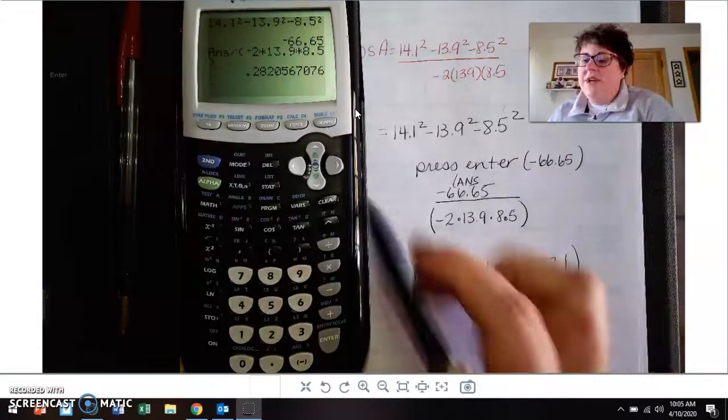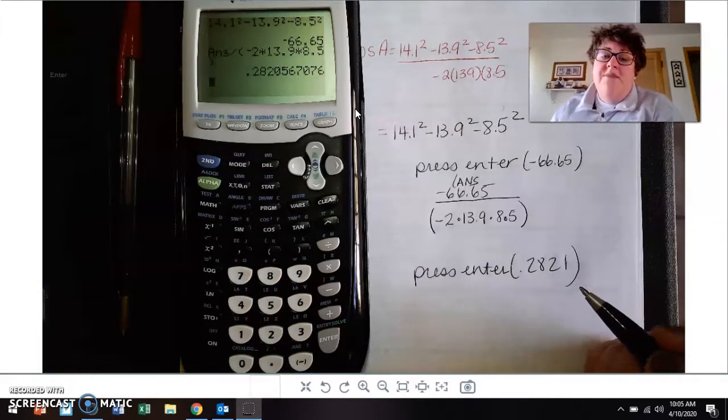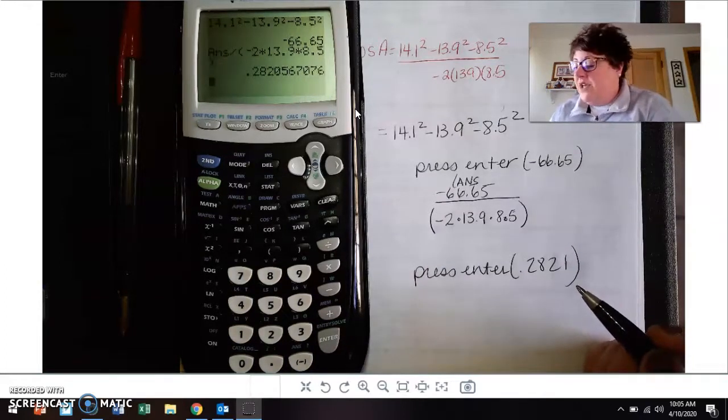Now remember, this is the cosine of alpha, or the cosine of A, cosine of angle A. And so that means that we need to take the inverse cosine of both sides.